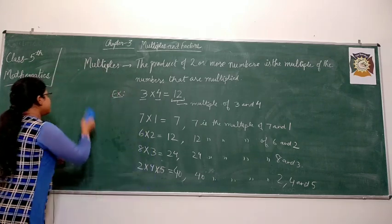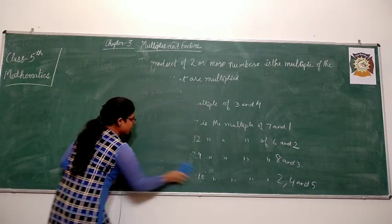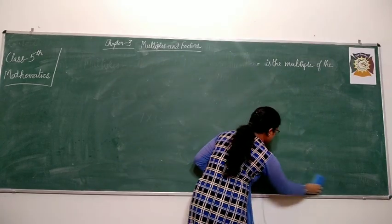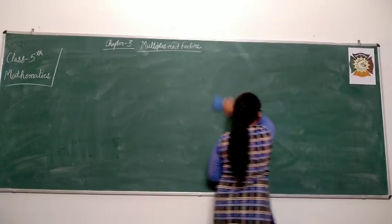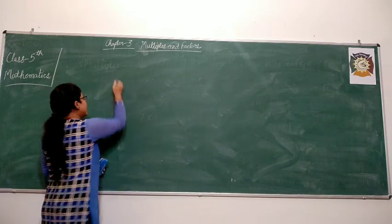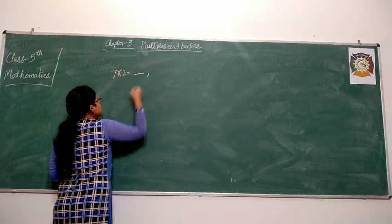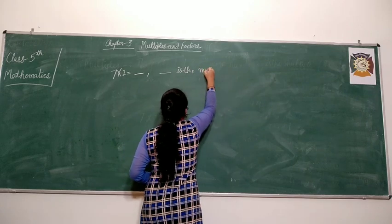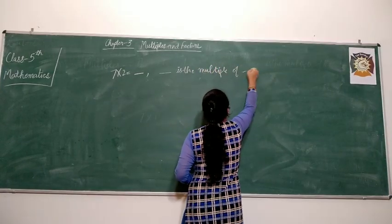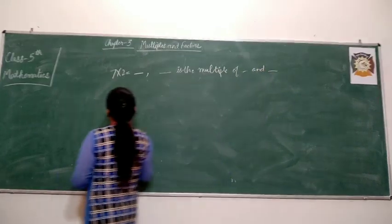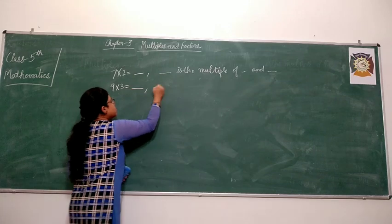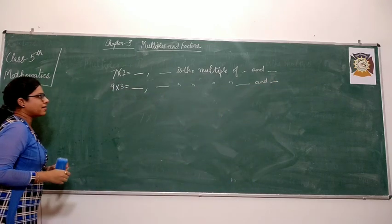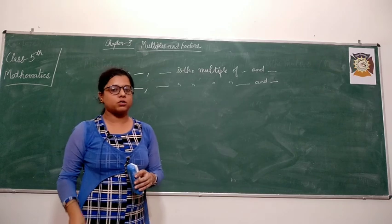So this is the simple definition for multiples. On the basis of this, you can do some fill-in exercises in your book. Like 7 multiplied by 2 is blank — you will fill the answer and conclude that blank is the multiple of blank and blank. Similarly, 9 into 3 equals blank, so blank is the multiple of blank and blank. I hope you can solve these examples in your book on the same concept.